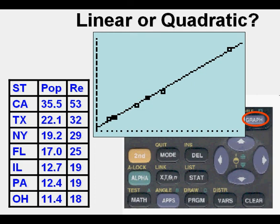If we have a state, say the state of Utah, with a population of 5 million, for instance, we can go ahead and predict how many representatives that state should have. So this technique has real-world uses.